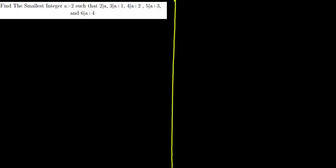In this video we're going to be solving this problem: find the smallest integer a greater than 2 such that 2 divides a, 3 divides a plus 1, 4 divides a plus 2, 5 divides a plus 3, and 6 divides a plus 4.